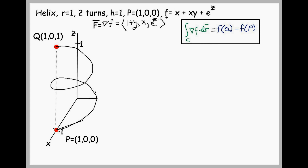To begin, we start with the potential function and take its gradient in order to produce the vector field F. The gradient is just the partials expressed as a vector. So the partial with respect to x is 1 plus y, the partial with respect to y is x, and the partial with respect to z is e to the z.